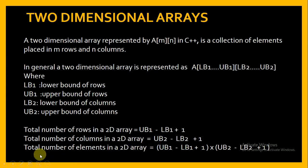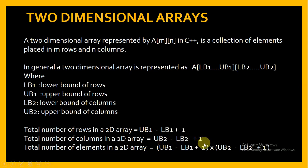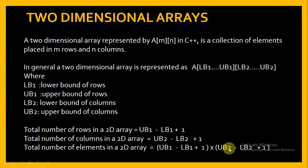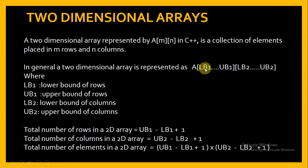And if we calculate the total number of elements in a 2D array, it is total number of rows into total number of columns, so it is (UB1 - LB1 + 1) into (UB2 - LB2 + 1). And if we talk about C++, LB1 and LB2 are both 0.